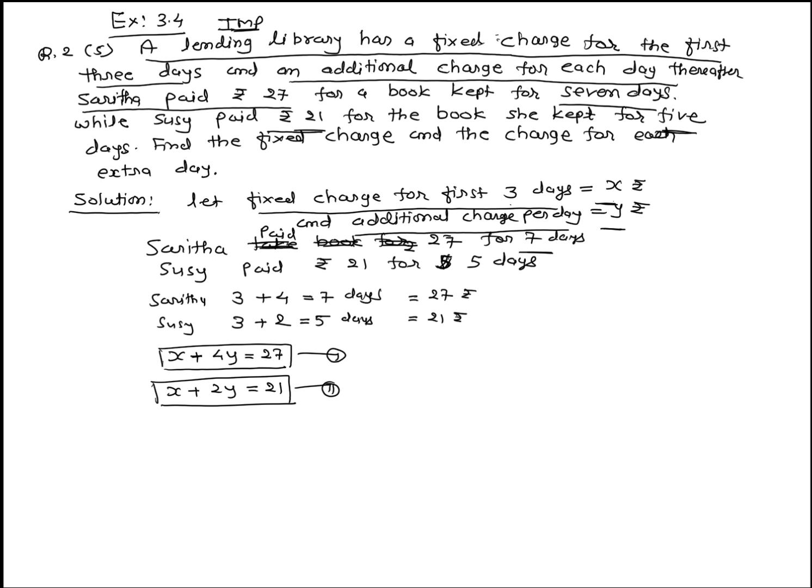Why? 3 days fixed charge is X, plus extra 4 days, one day charge Y rupees, 4 into Y is 4Y. Sushi paid total 27. Similarly, Sushi paid 21 rupees.